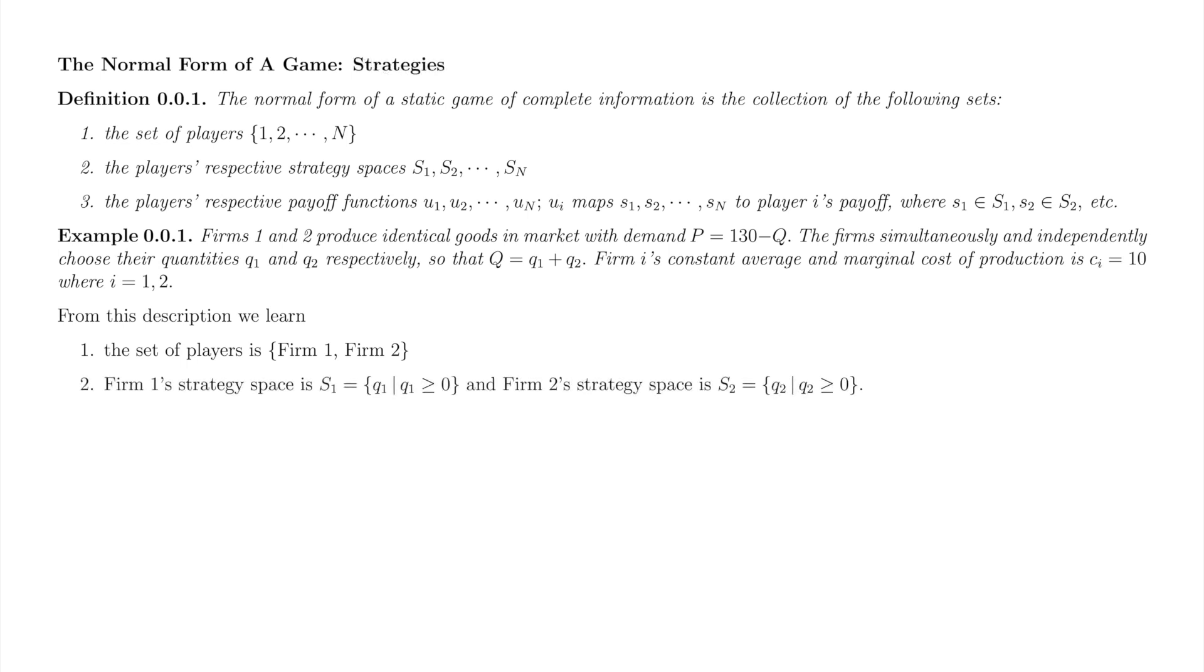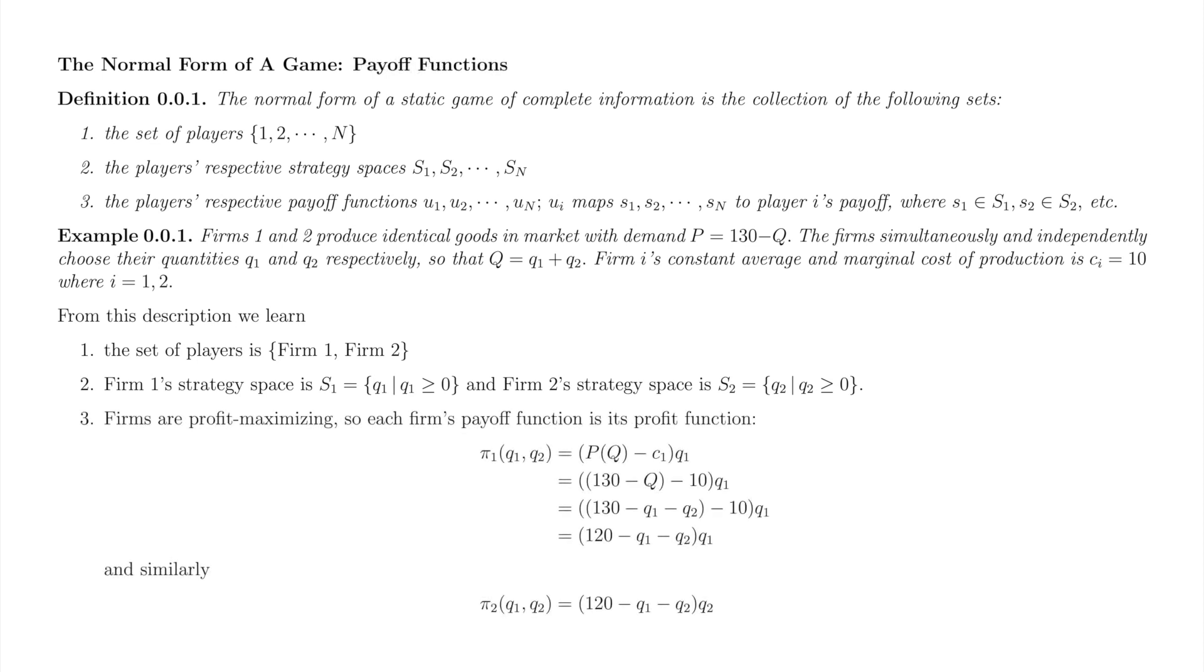Each firm's strategy space is the set of possible quantities. Although the normal form did not state it explicitly, quantities have to be non-negative. There is no negative stuff. Firms maximize profit, so whenever firms play a game, each firm's payoff function and its profit function are one and the same. In this game, the market price depends on Q1 and Q2 as specified in the market demand function.